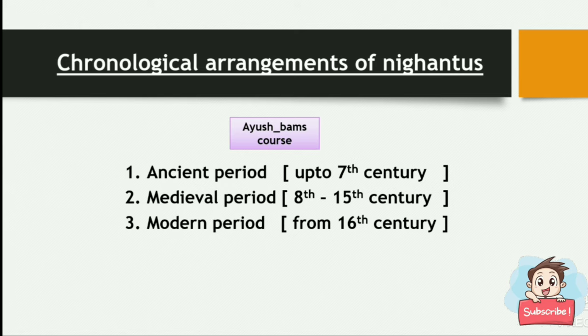Chronological arrangements of Nighantus: There are three periods — ancient period, medieval period, and modern period. The ancient period is up to the 7th century. The medieval period is from the 8th to the 15th century, and the modern period is from the 16th century onward.